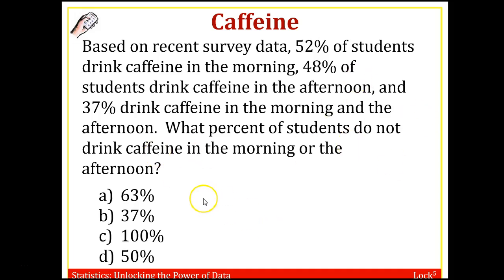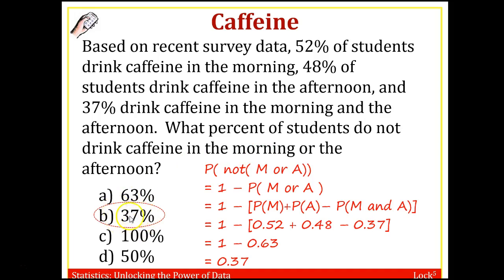The answer is 37%, but the process is more important than the answer. The probability of not M or A — I can get rid of this 'not' by saying 1 minus the probability that M or A happens. How do you get the probability that someone drinks in the morning or in the afternoon? This is the additive rule: P(M or A) = P(M) + P(A) minus the probability that they drink coffee both times, to avoid double counting.